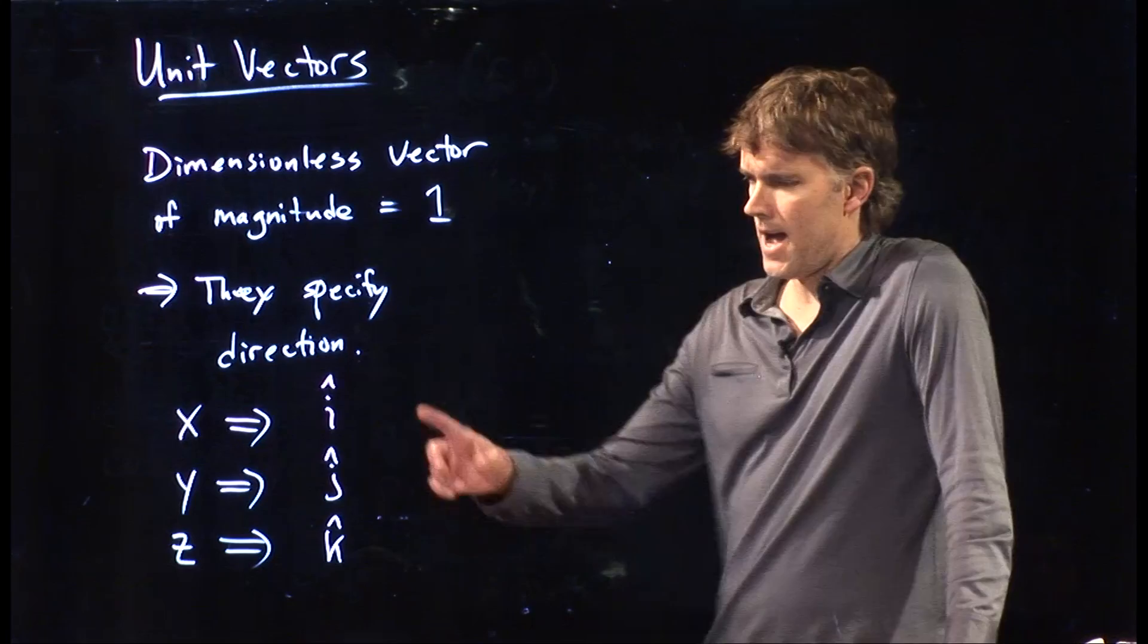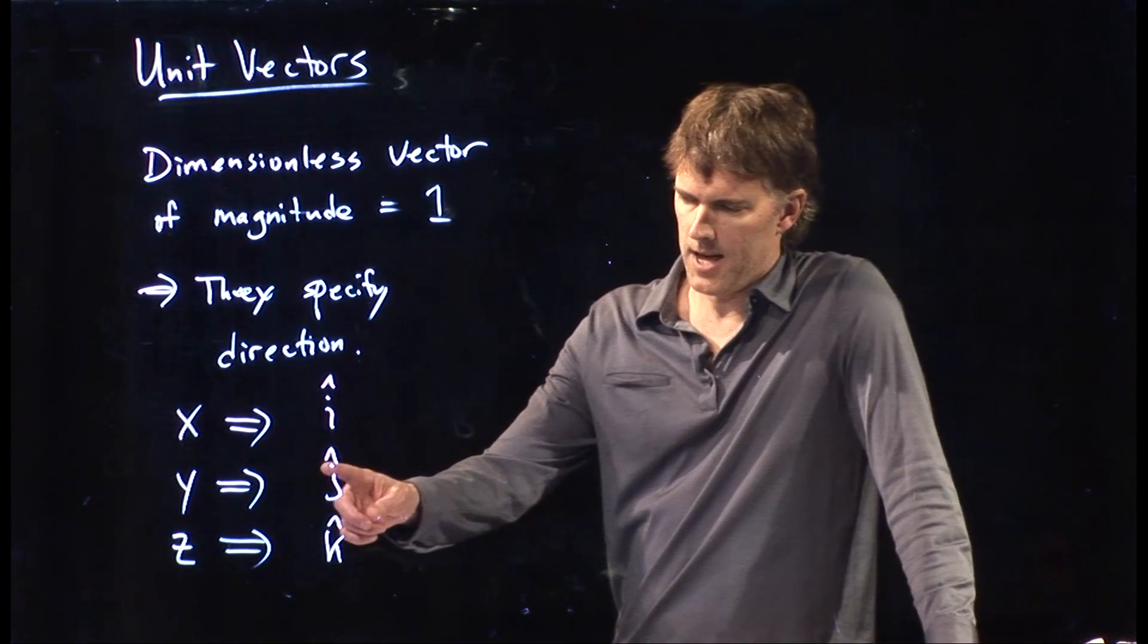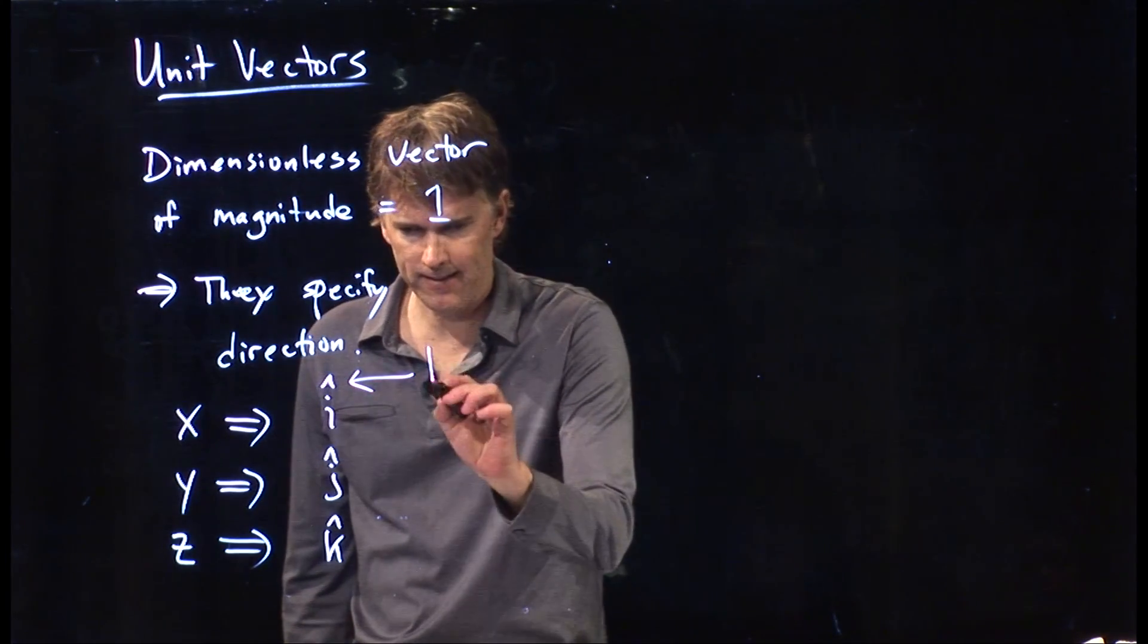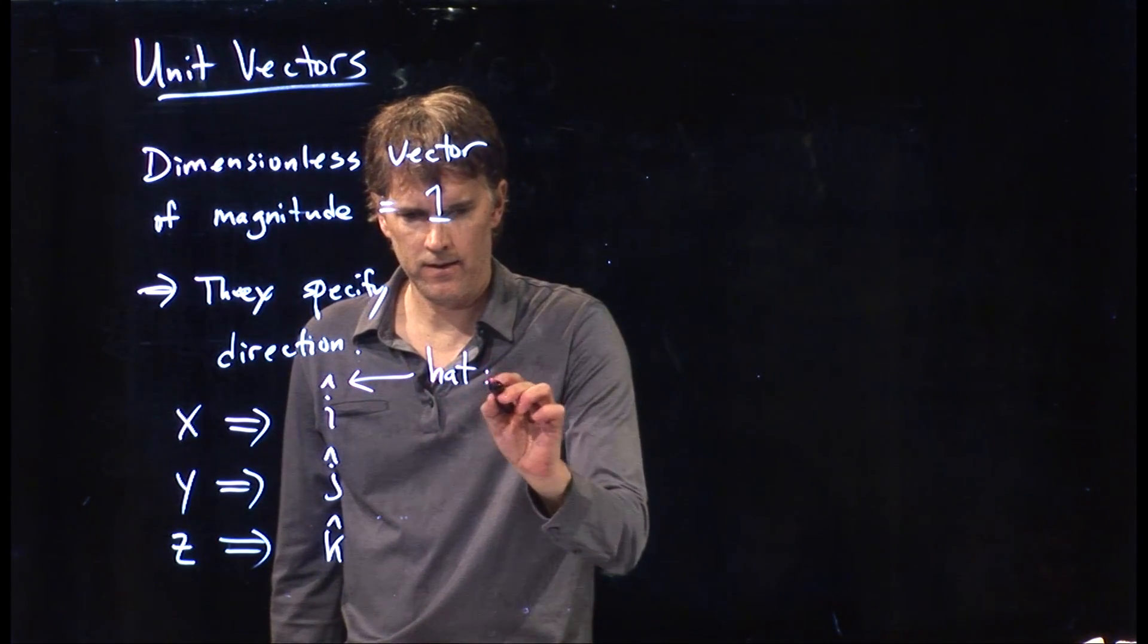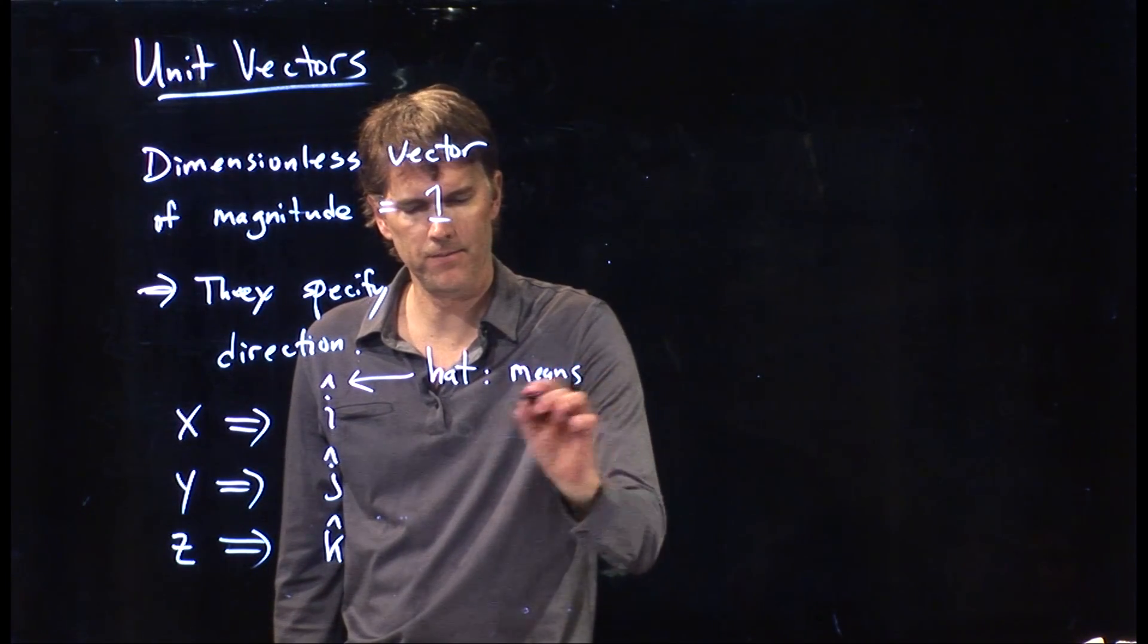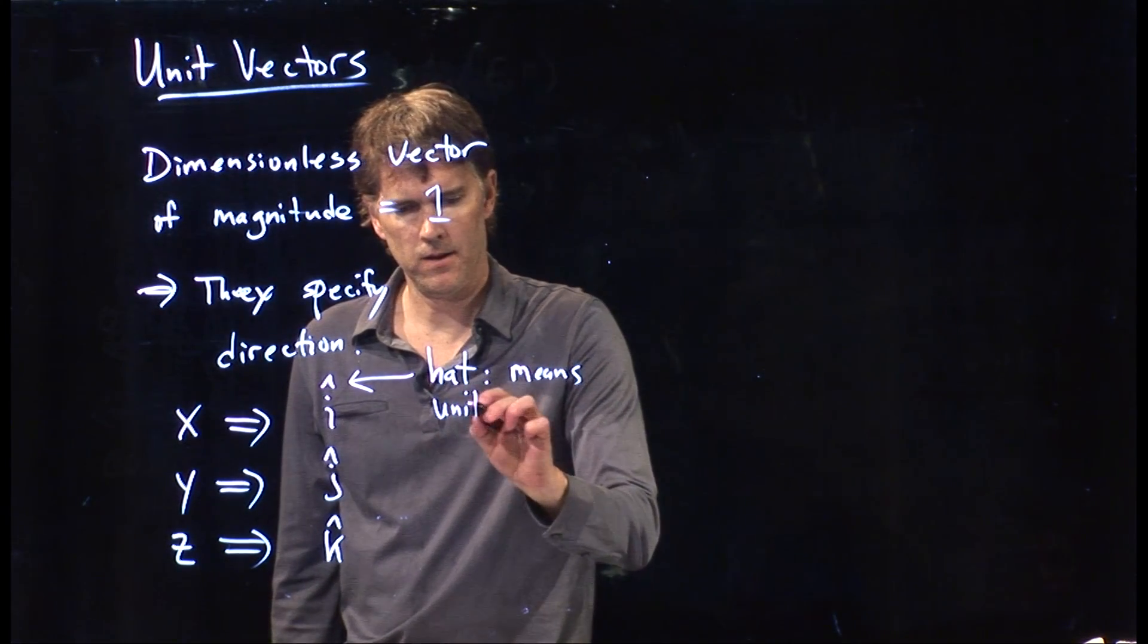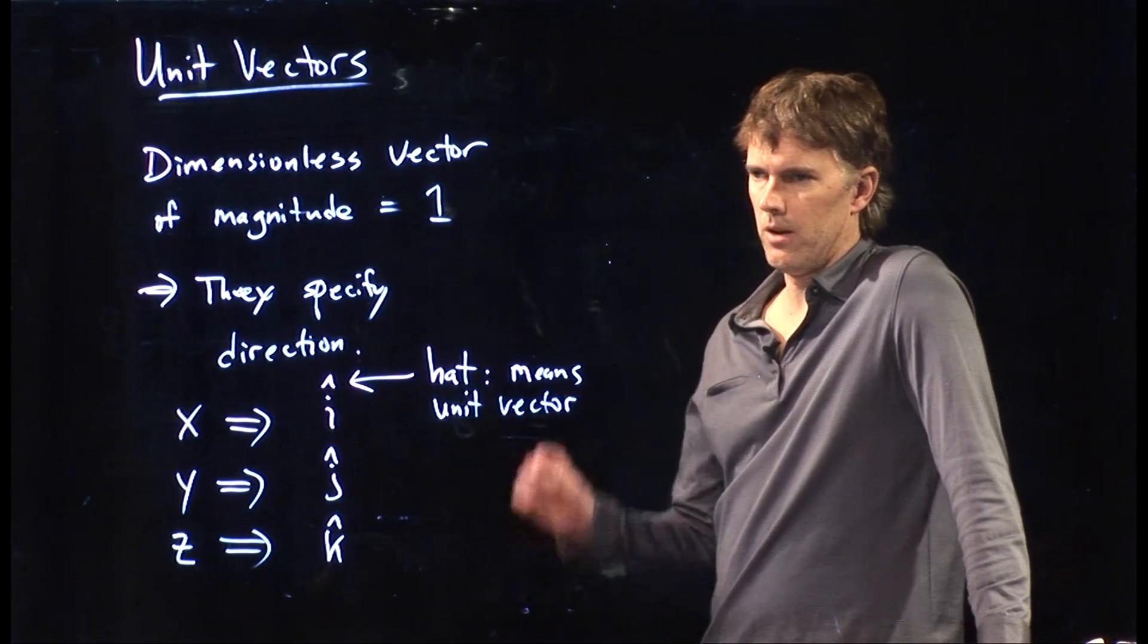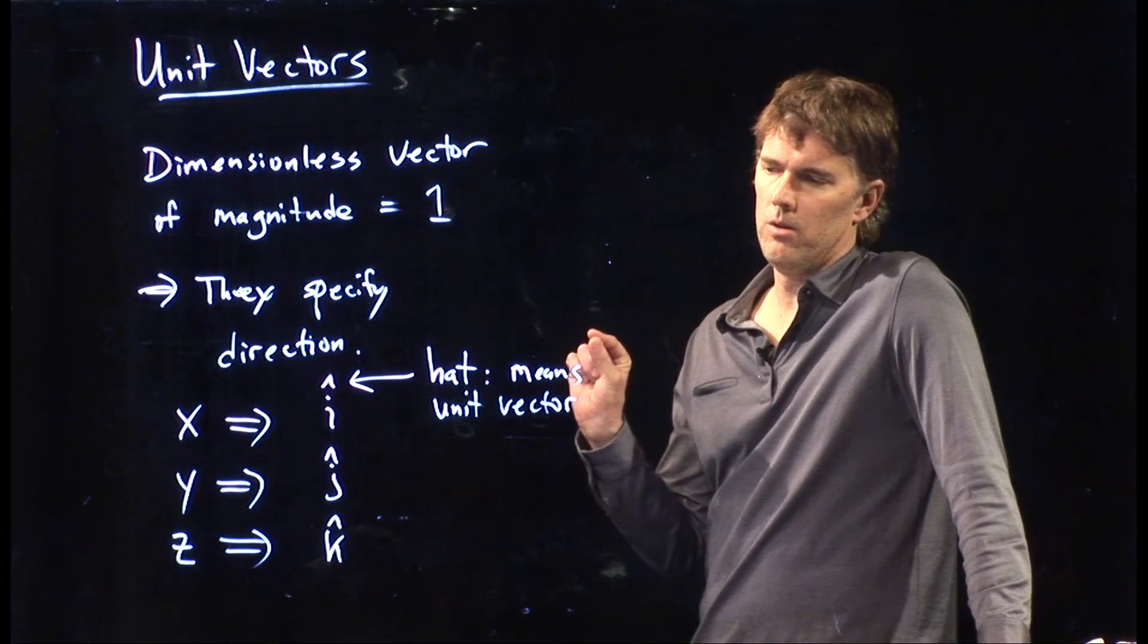We write them as i-hat, j-hat, and k-hat. And the hat, this thing is called a hat. It means it is a unit vector. So it is a vector, but it only has magnitude one.